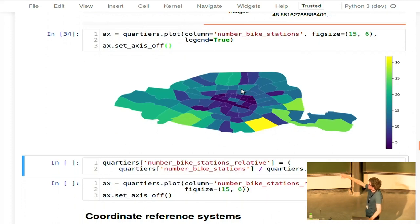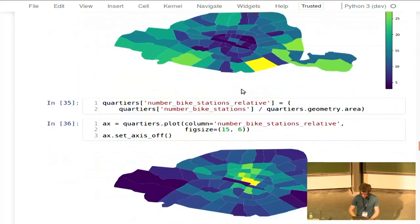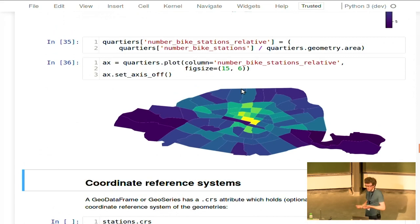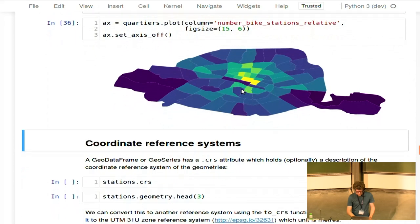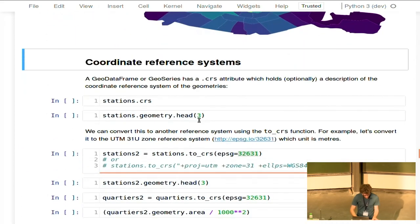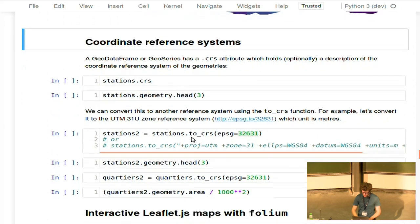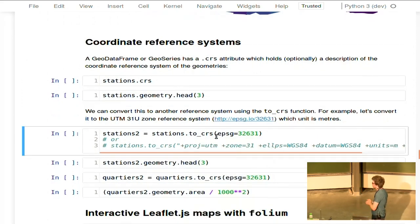For this case, because it's more informative to know the relative number of bike stations by the area, I calculated that as well. And you see here that in the center there are more bike stations than further away. I will maybe skip the example here, but just to say that GeoPandas can also very easily convert from one coordinate reference system to the other by using PyProj under the hood, using the ToCRS function.